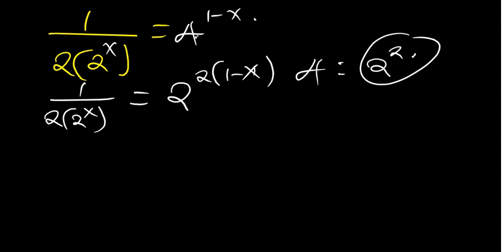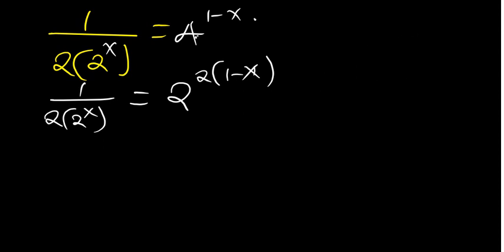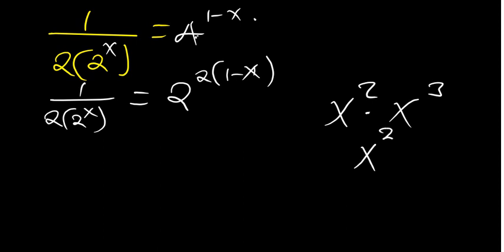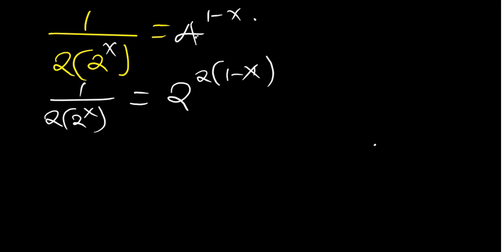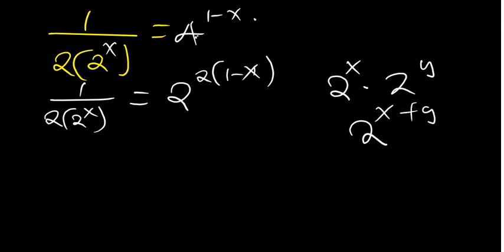Now, what I have to know is that when talking about indices, if the bases are the same — for example, x to the power 2 times x to the power 3 — we just add the powers, so it's x to the power 2 plus 3, meaning x to the power 5. Similarly, 2 raised to the power x times 2 raised to the power y is the same as 2 to the power x plus y, because we add the powers when the bases are the same.